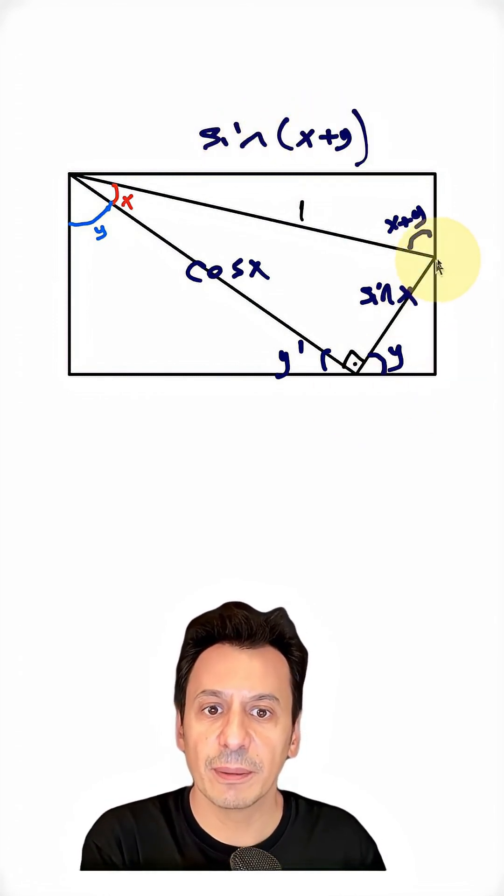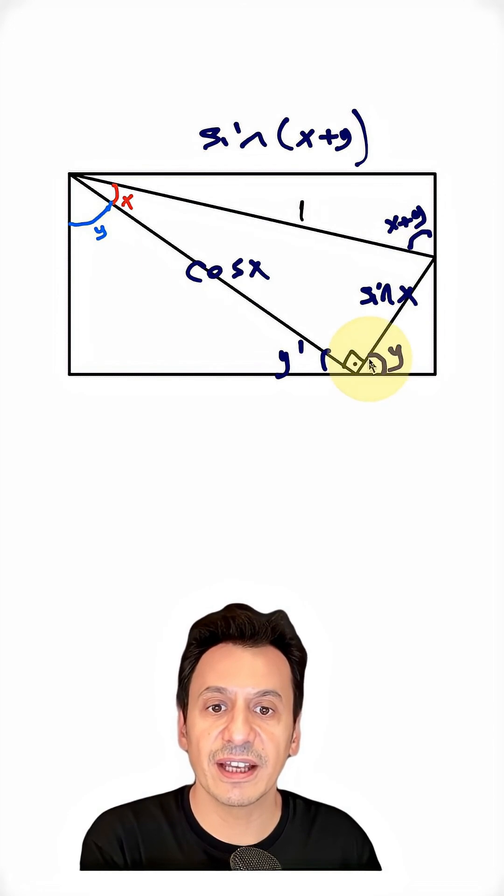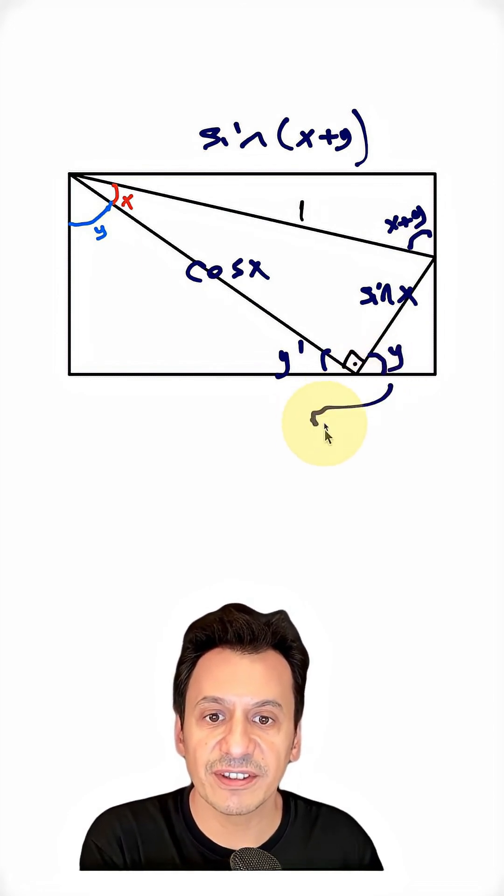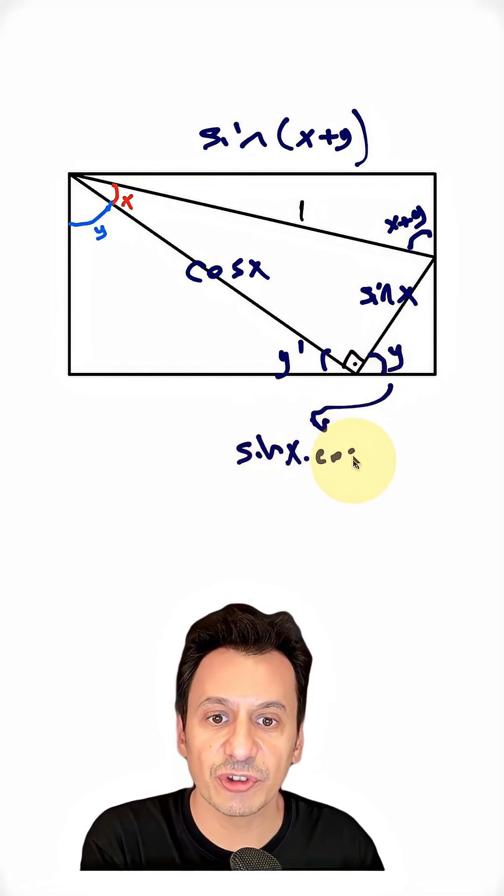When I look at the right triangle here, my hypotenuse is sine x and the angle here is y. So, I can say that the length of the side here is sine x times cosine y.